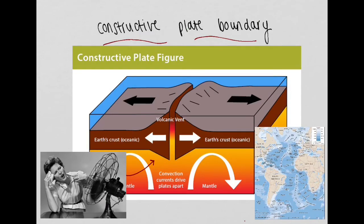Second is a constructive plate boundary. Constructive plate boundaries occur where two plates are moving apart from one another in opposite directions. As these plates move apart, cracks and fissures form in the gap, allowing magma to push through the highly pressurised interior of the earth.